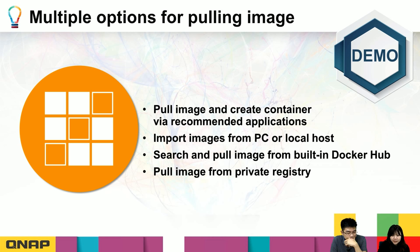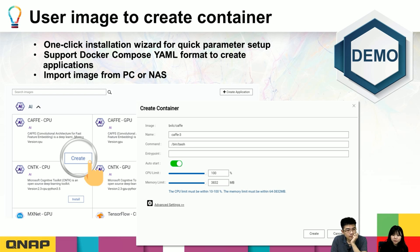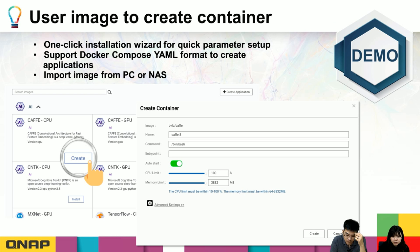The second step is using your image to create a container. You can use the one-click installation wizard and set all parameters and network settings. Container Station also supports Docker Compose YAML file format — you can copy and paste your file directly into the UI. You can also import images from your PC or NAS to create containers, or import container files from your localhost or personal computer.